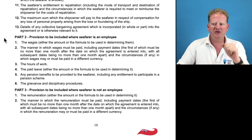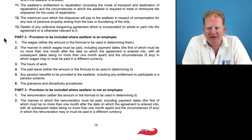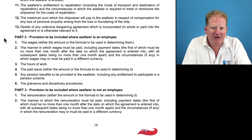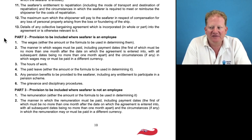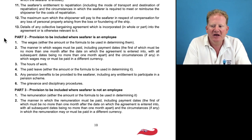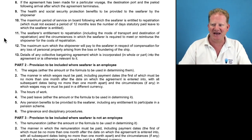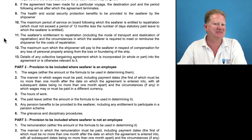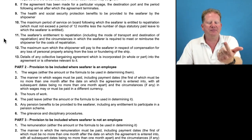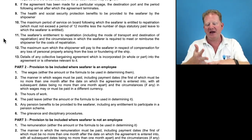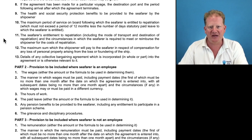Part two — provisions to be included where the seafarer is an employee: the wages, how much money per month; the manner in which this money is going to be paid; the hours of work; paid leave — how many paid leave days per month; any pension benefits provided to the seafarer, including any entitlement to participate in a pension scheme; and the grievance and disciplinary procedures — that's the bit that you and I would probably look at. So on all SEAs we've got these first 13 parts and then another six parts. I want you to make a good list of what must be on an SEA — make sure it's the things that you would remember.